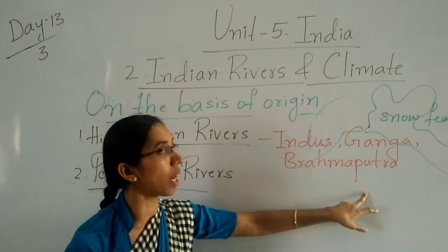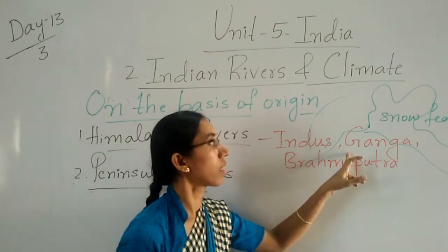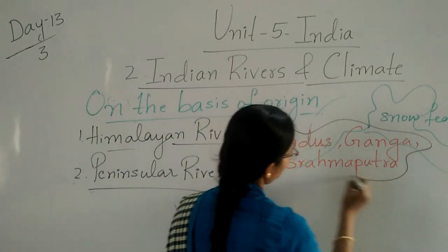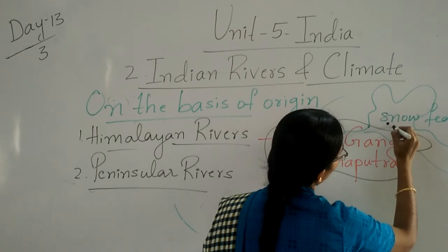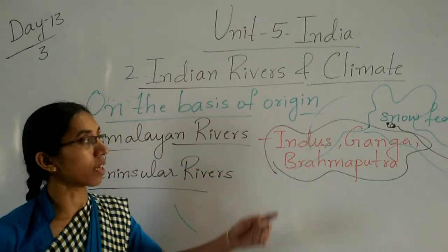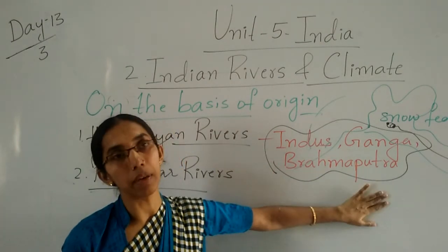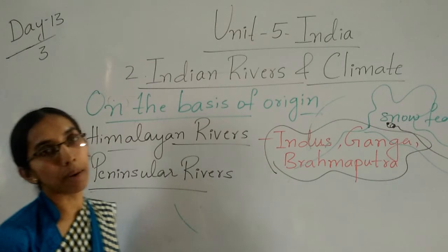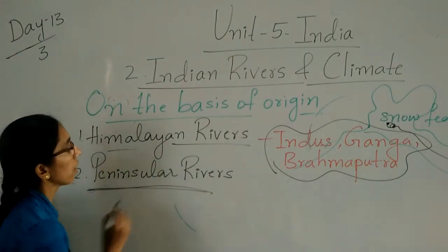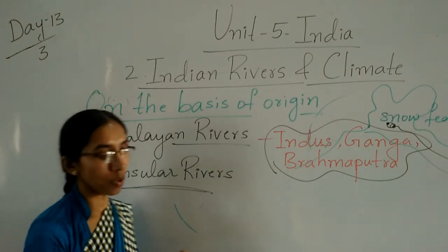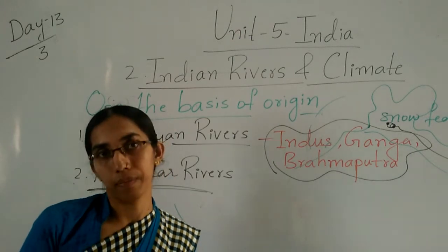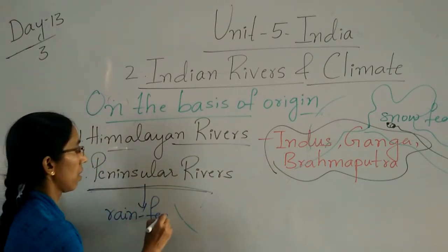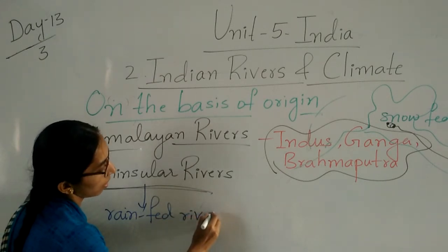The three major rivers of the Himalayas are Indus, Ganga, and Brahmaputra. All three originate in the Himalayas. We will discuss them in detail later. Now we see the next one — Peninsular rivers. The Peninsular rivers are rain-fed rivers.